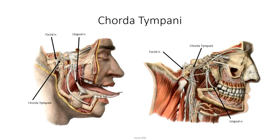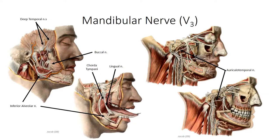The lingual nerve also accepts a small but important branch originating from the facial nerve called the chorda tympani. This is responsible for the special sense of taste, again from the anterior two-thirds of the tongue, as well as parasympathetic innervation to the submandibular and sublingual glands to stimulate salivation. The last principal branch of the posterior division is the inferior alveolar nerve. This branch passes into the mandibular foramen along with the inferior alveolar artery and supplies sensory innervation to the same structures of the lower jaw. It also gives off a single motor branch to the mylohyoid muscle, which comes off just before the nerve enters the mandibular foramen.